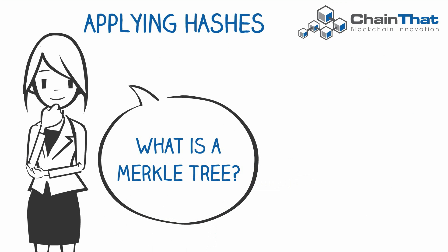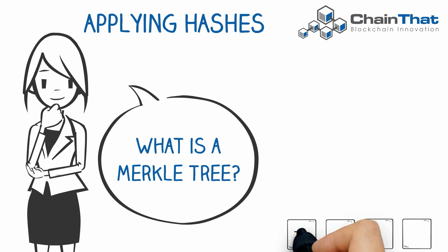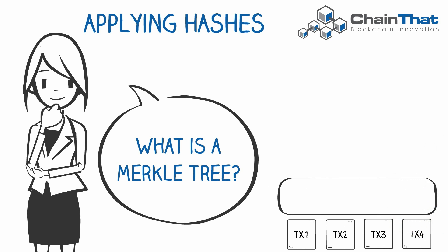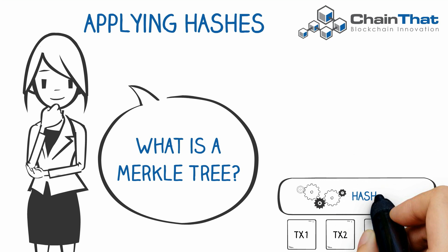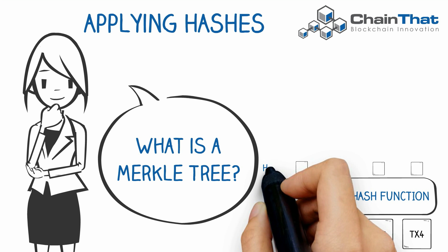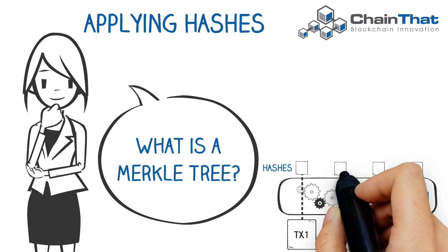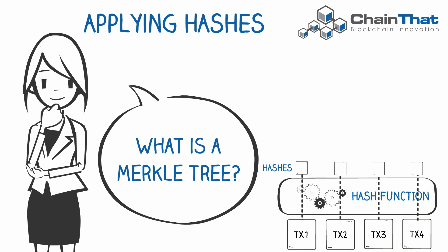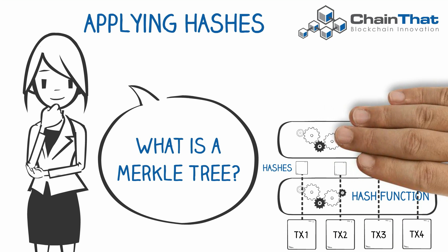Merkle trees are an essential part of a blockchain for data integrity. Each block in the blockchain can contain multiple transactions which each contain data. In this example there are four transactions: TX1, 2, 3, and 4. Each of the four transactions' data is passed through a hash function, generating four unique hashes — one for each transaction.